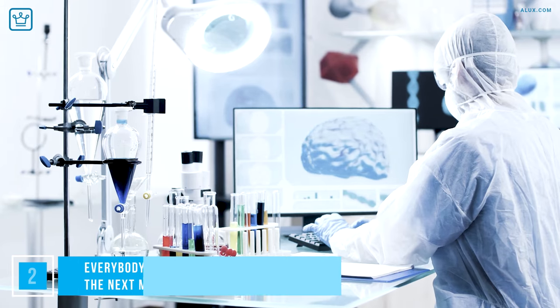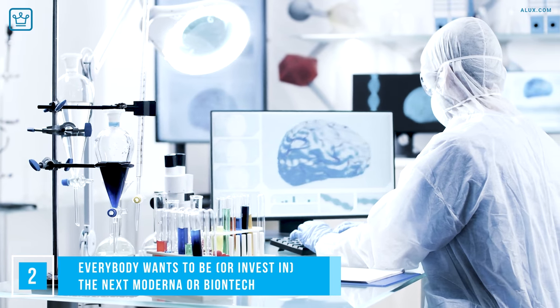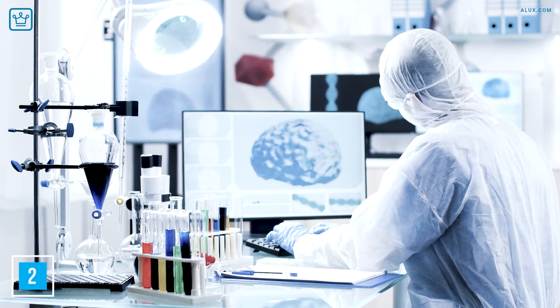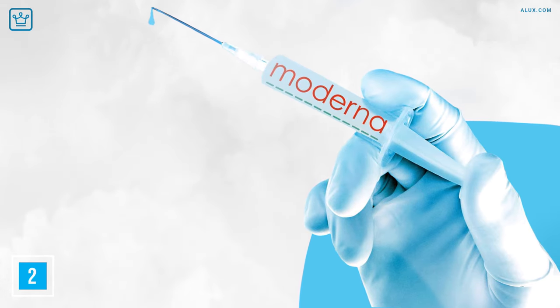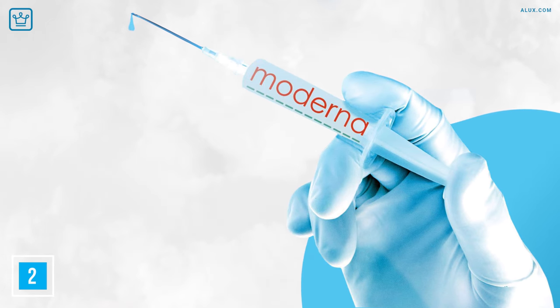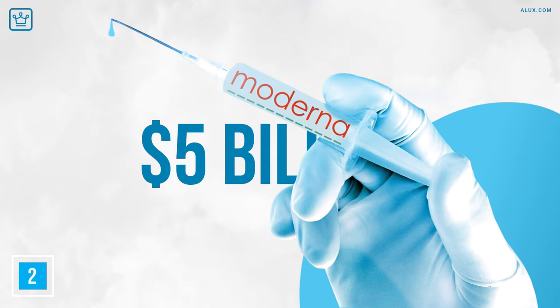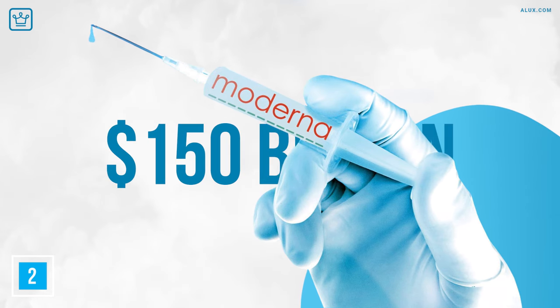Number 2. Everyone wants to be or invest in the next Moderna or BioNTech. So this is connected to number 1 on the list, but it's worth taking a look at separately. Two years ago, Moderna was far from the household name it is now. It was a very young company that had only recently gone public in 2018 with a market capitalization of $5 billion. Thanks to the vaccine being approved in December 2020, its value now stands at a whopping $156 billion.